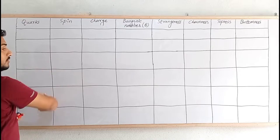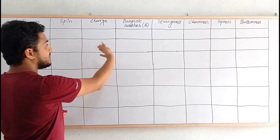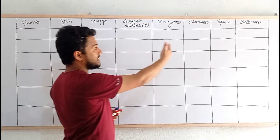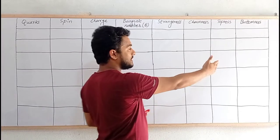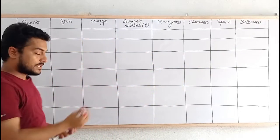I have a table for quarks showing the following properties: spin, charge, baryonic number, strangeness, charmness, topness, and bottomness. These are the properties of the quarks.